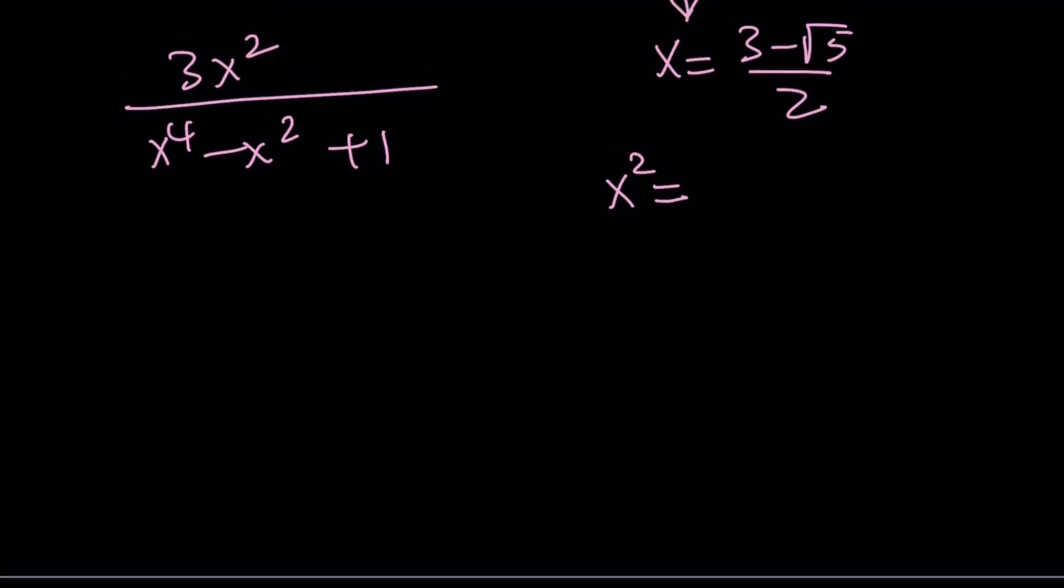Let's find x squared first. I want to square the numerator. That's 9 plus 5 minus 6 root 5. Yes, that is how I usually square differences. And then divide it by 4. This is going to be a 14. So we can go ahead and divide by 2.